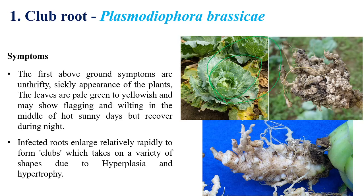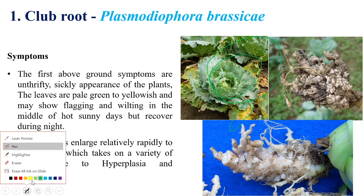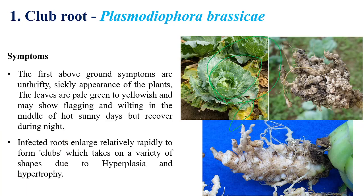In later stages, yellowing of the lower leaves can be clearly observed, along with pale green color discoloration of the plants. Wilting can also be observed. On the upper leaves or pods, the size of the flower can also be reduced.